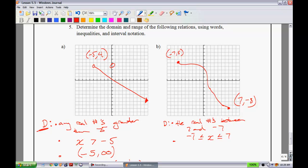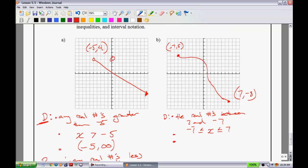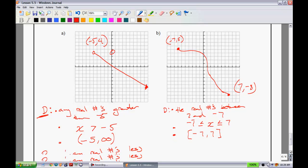Using the interval notation, we would have the brackets like so. Since we're including both those points, we would have a negative 7, comma 7 with the square brackets, meaning include. All right.